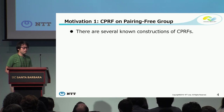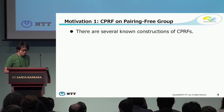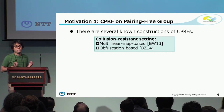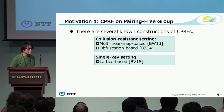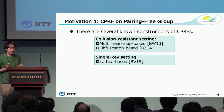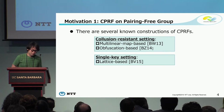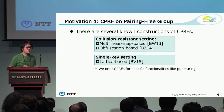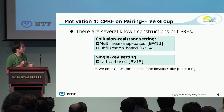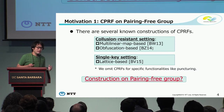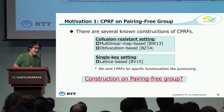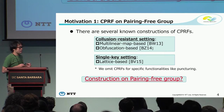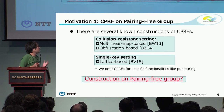Our motivation is as follows. There are several known constructions of CPRF. In the collusion-resistant setting, where the adversary can obtain arbitrarily many constrained keys, there are constructions based on multi-linear maps or obfuscation. In the single-key setting, where the adversary can only obtain a single constrained key, there are lattice-based constructions. We omit constructions for specific functionalities with very limited scope like puncturing or bit-fixing. Our question is: is there a construction of CPRF for a large function class based on pairing-free groups? Even with pairings, no such construction exists, but in this work we focus on pairing-free groups.